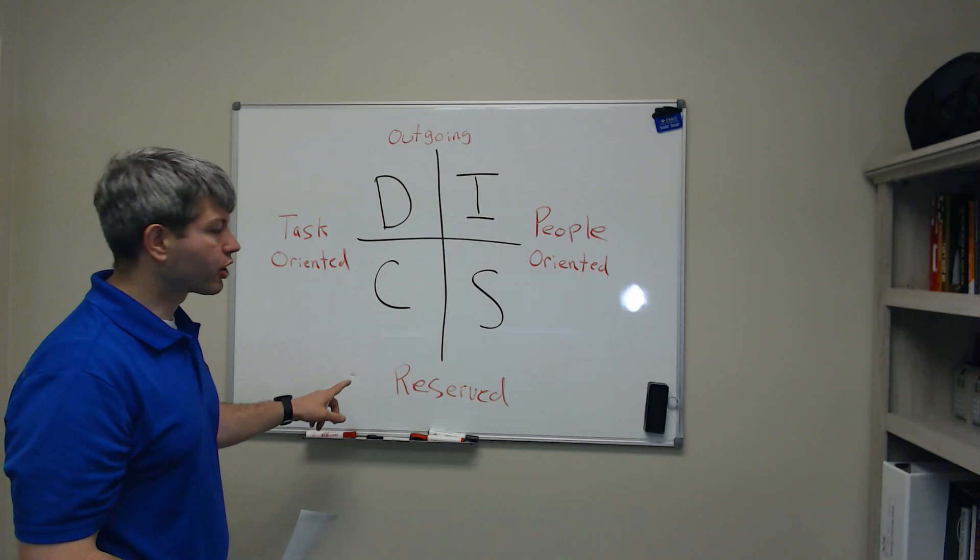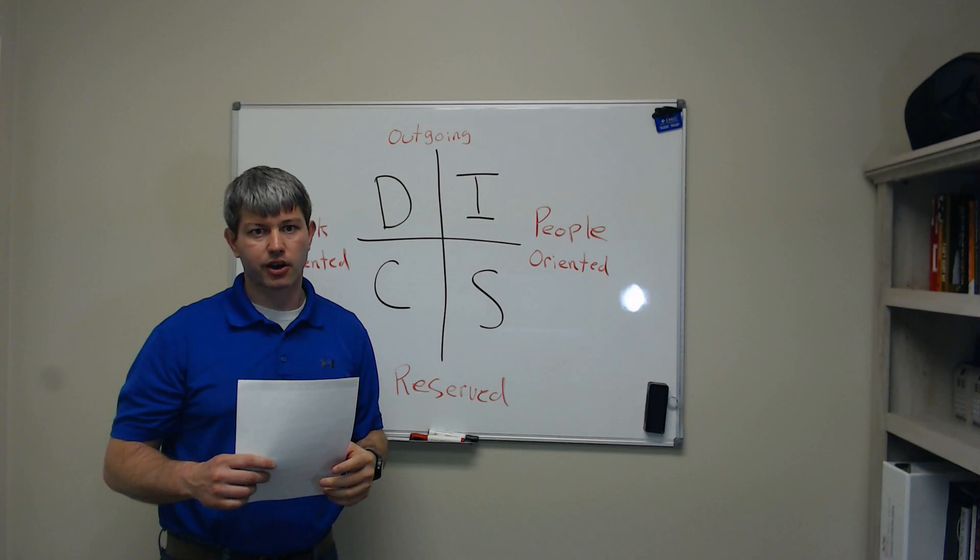So the D is a dominant personality type. They're focused on accomplishments. They're driven by completing tasks. They're not very people oriented. They just want to get stuff done.